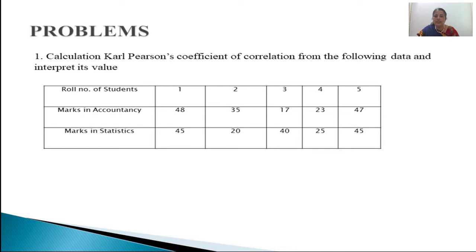After knowing all these things, let us take a problem on calculation of Carl Pearson's Coefficient of Correlation. Calculate Carl Pearson's Coefficient of Correlation from the following data and interpret the result — whether it is positive correlation, negative correlation, no correlation, and what degree of correlation. The data gives roll number of students, marks in accountancy, and marks in statistics.